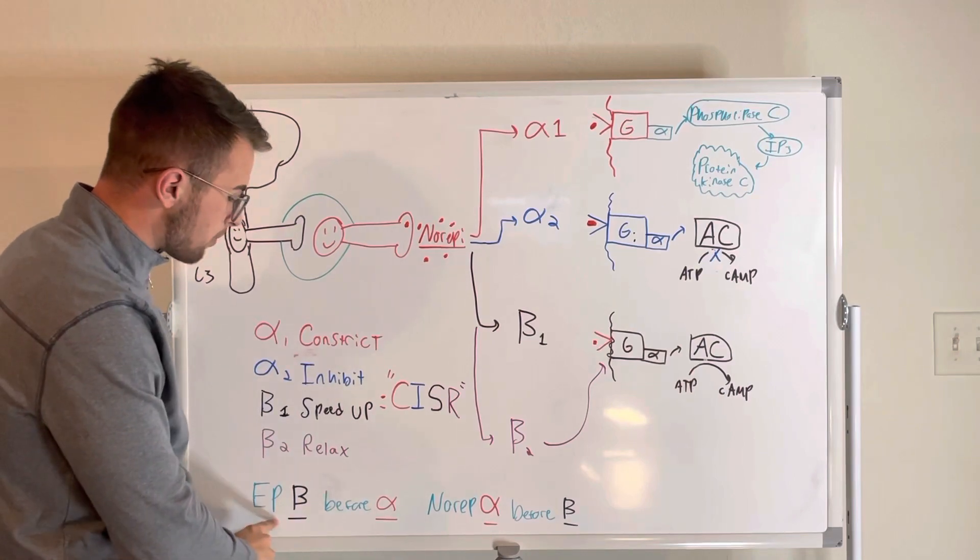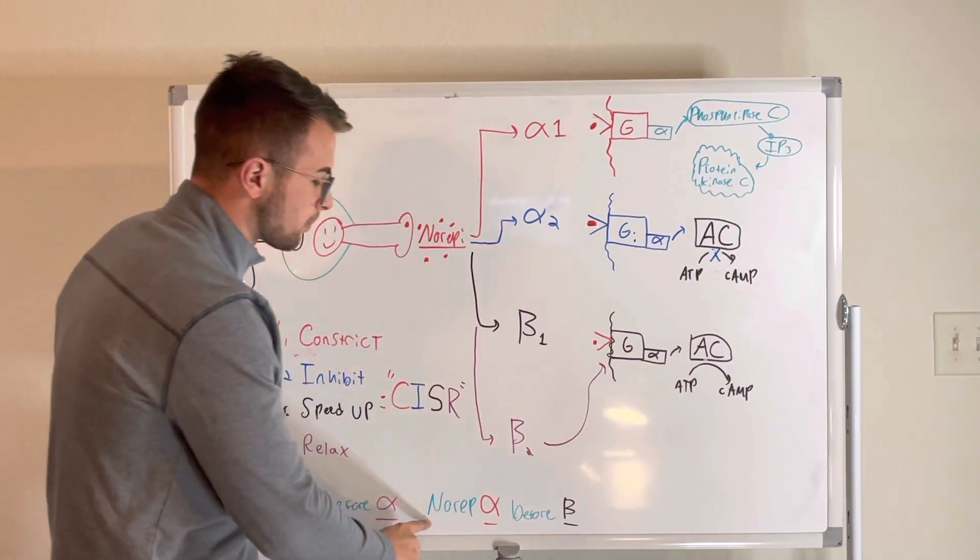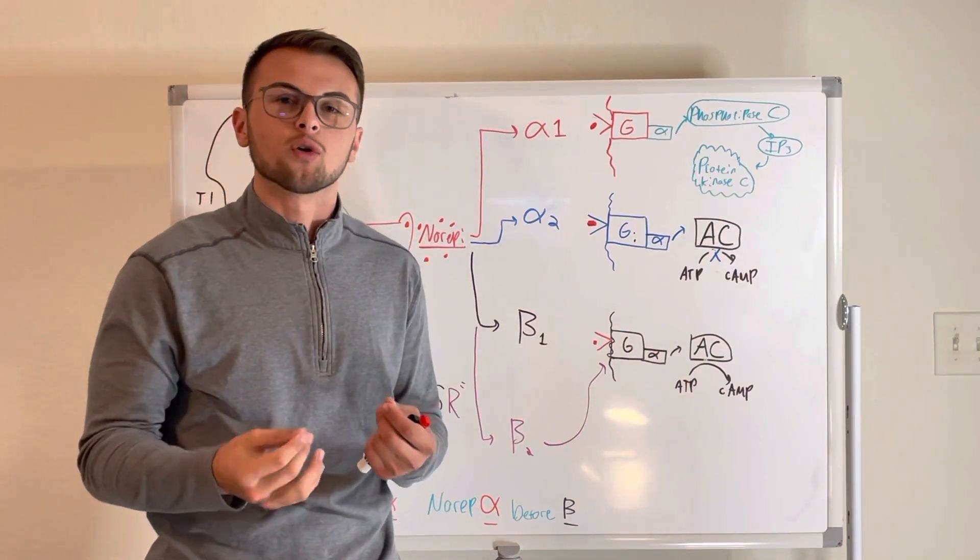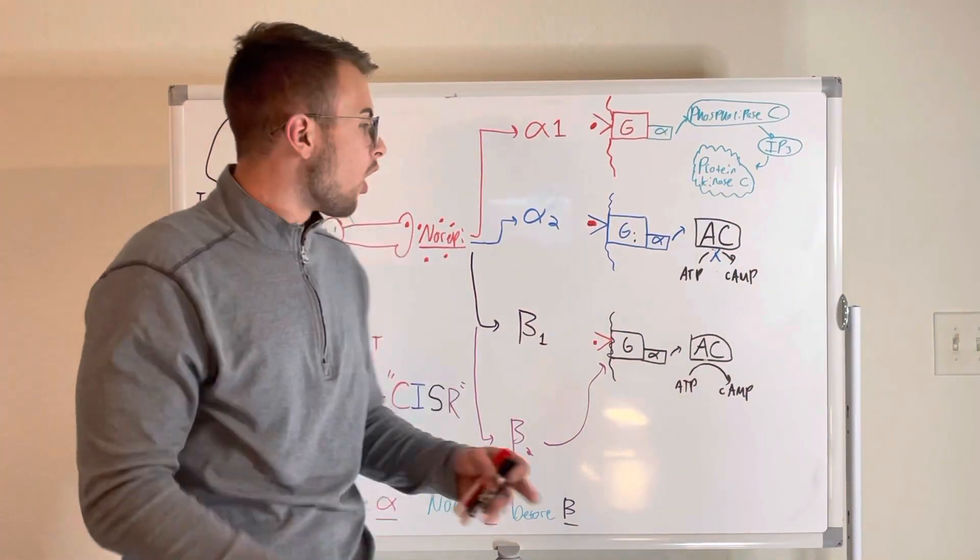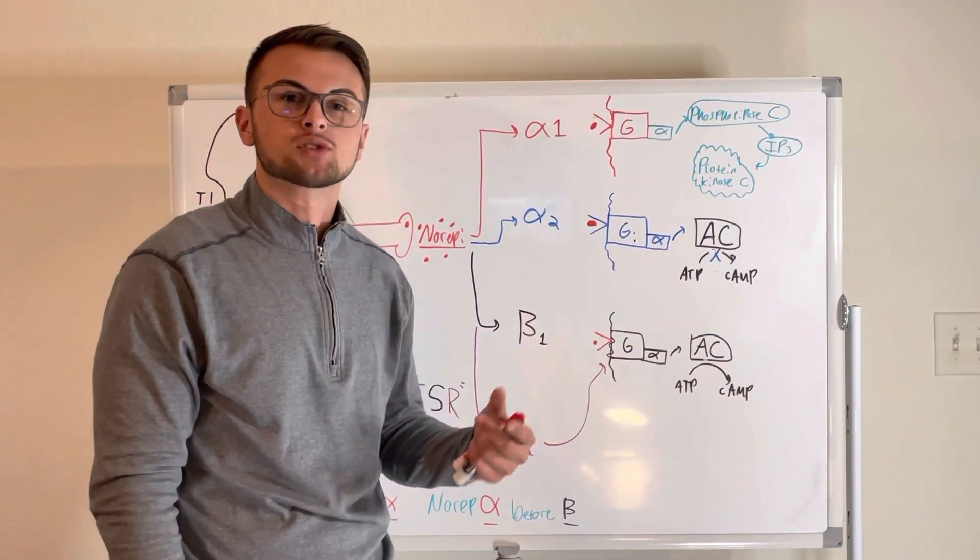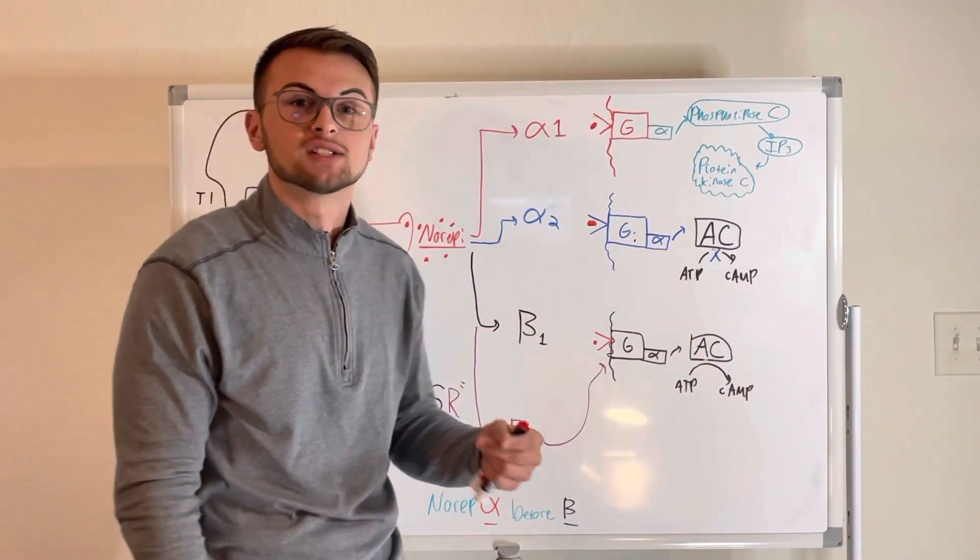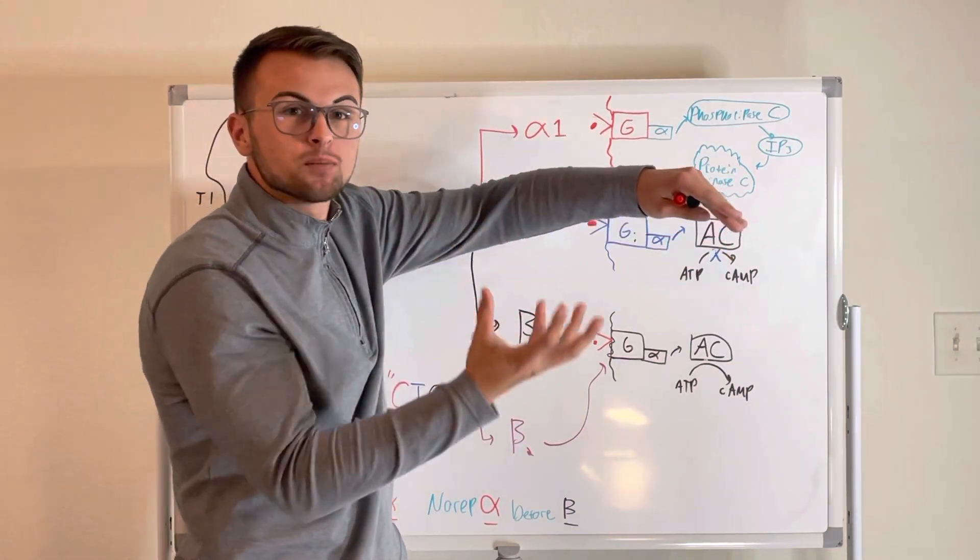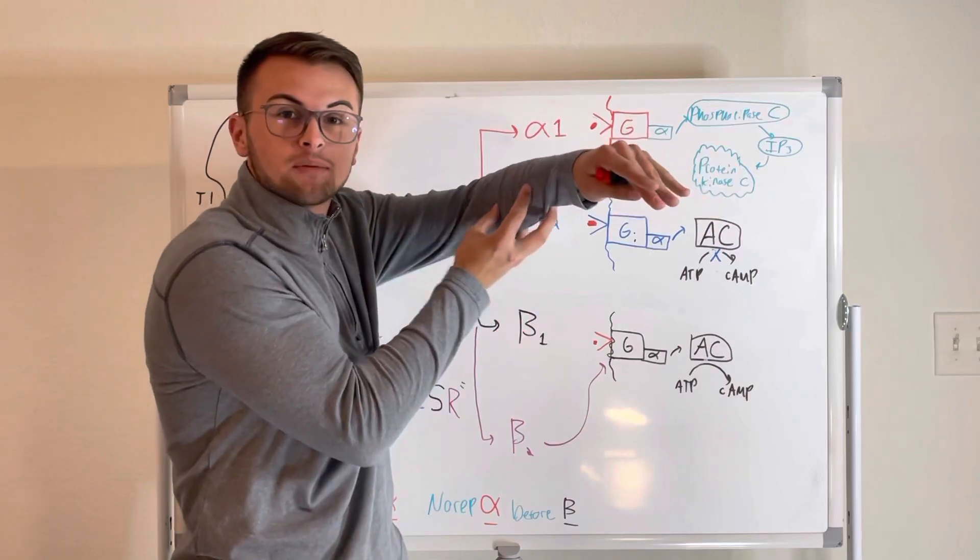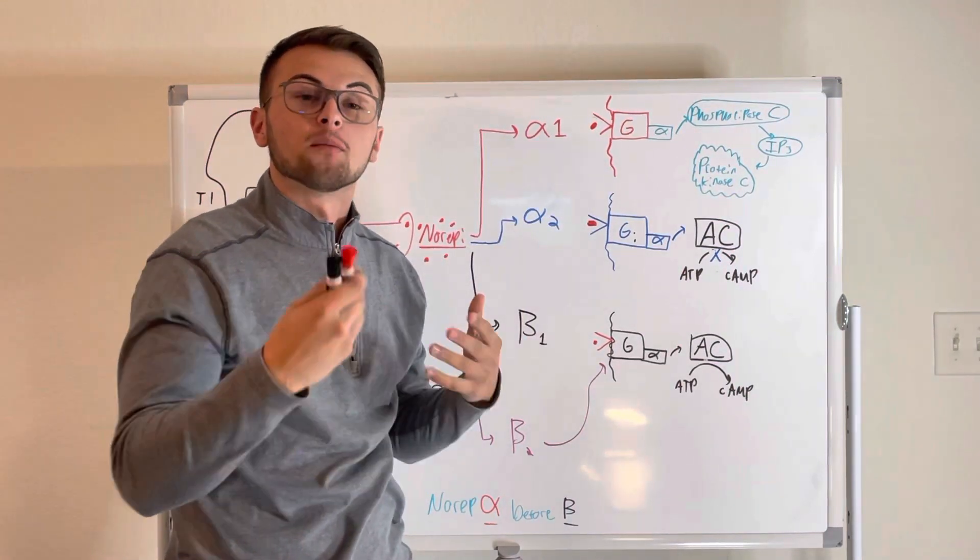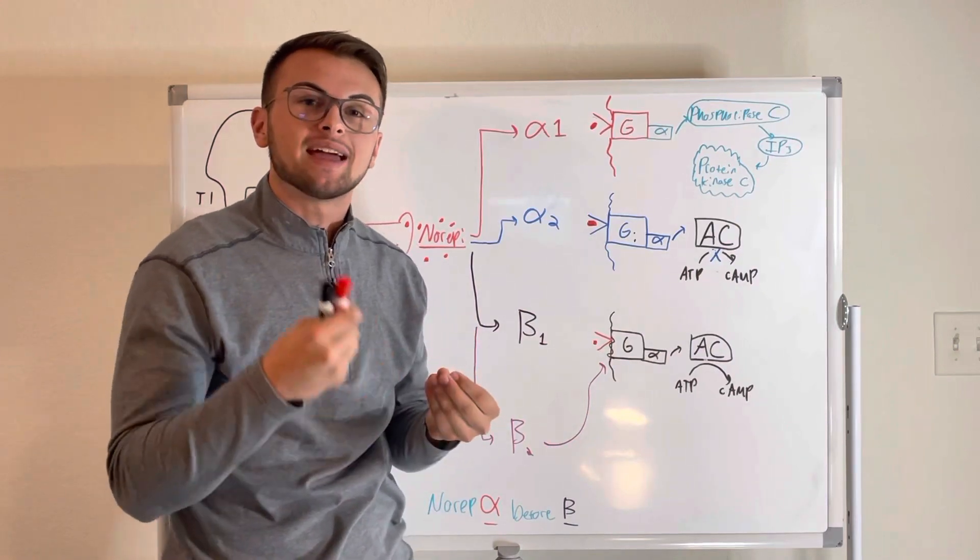And also we're going to talk about epinephrine B before A and norepinephrine A before B. So what we need to understand is that all of these adrenoreceptors are really just G proteins. They're sometimes called seven-pass receptors because they weave in and out of the cell membrane, sort of like stitches. So if this is a G protein, it's kind of stuck to the top of the cell membrane. These G proteins are composed of an alpha, beta, and gamma unit.